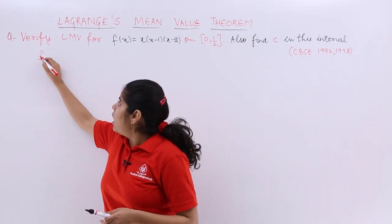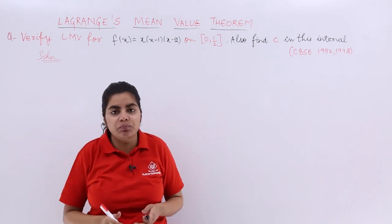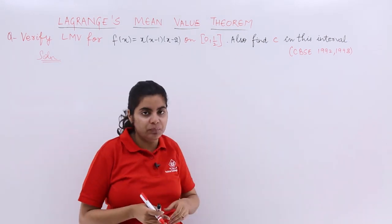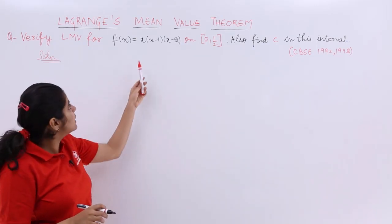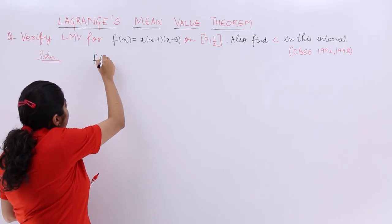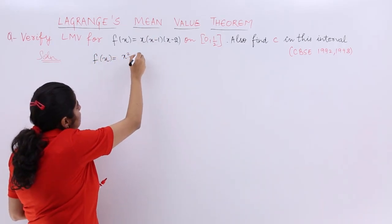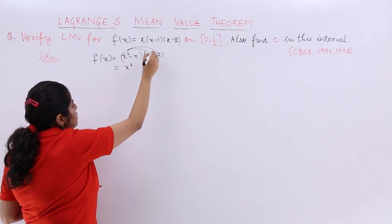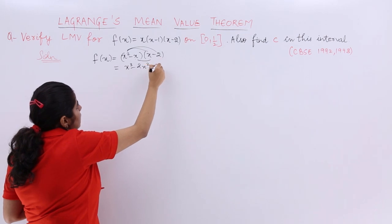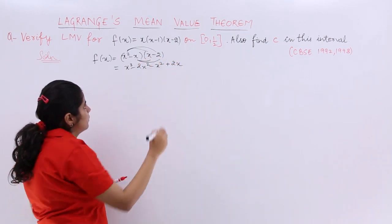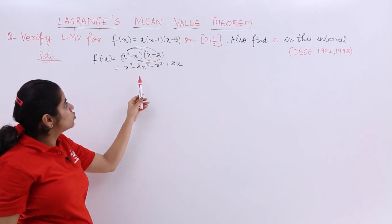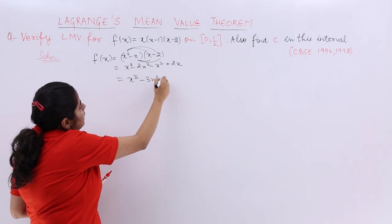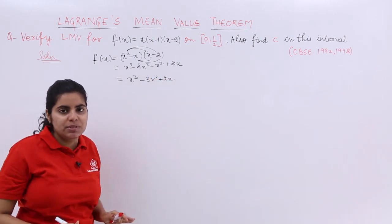Let's start with the solution. We have to first verify Lagrange's Mean Value Theorem and then find C. f(x) is the product of 3 different terms, so let's expand it. Multiplying x inside gives x² - x, then expanding further gives x³. After full expansion and simplification, f(x) = x³ - 3x² + 2x.